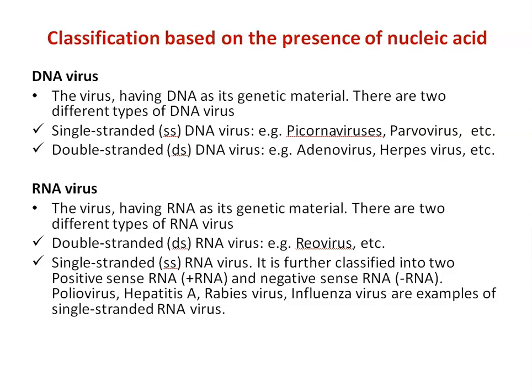RNA viruses have RNA as their genetic material. There are two different types of RNA viruses: double-stranded RNA viruses — for example, reovirus — and single-stranded RNA viruses, which are further classified into positive sense RNA and negative sense RNA. Examples include poliovirus, hepatitis A, and influenza virus.